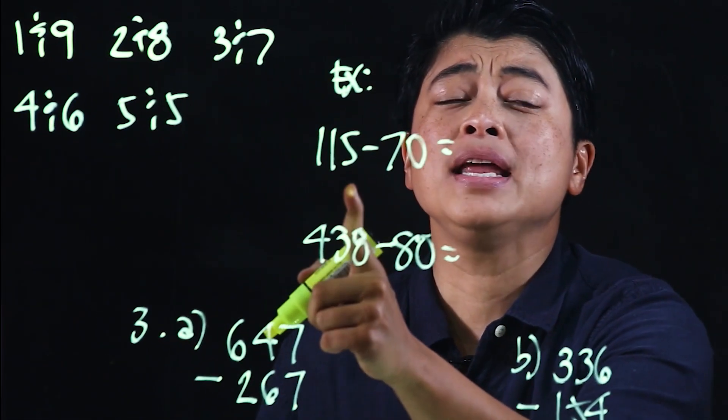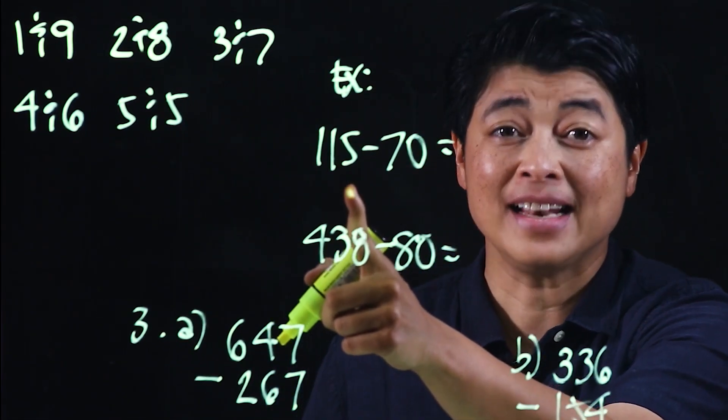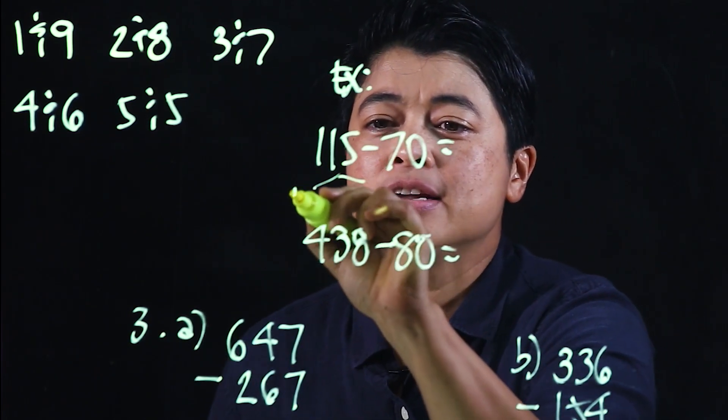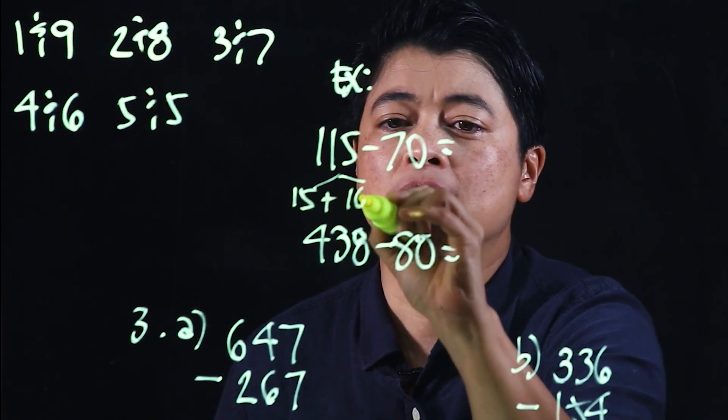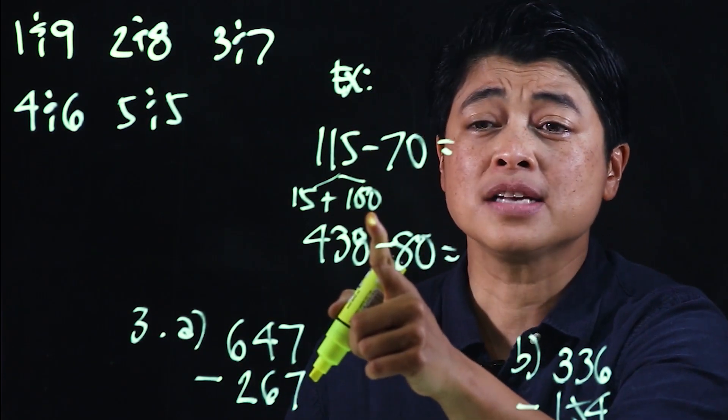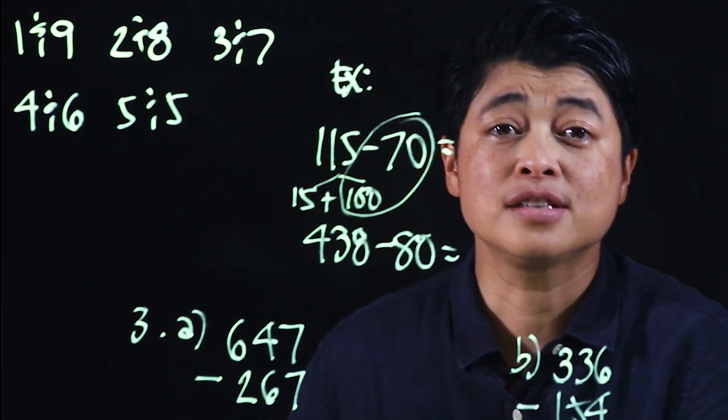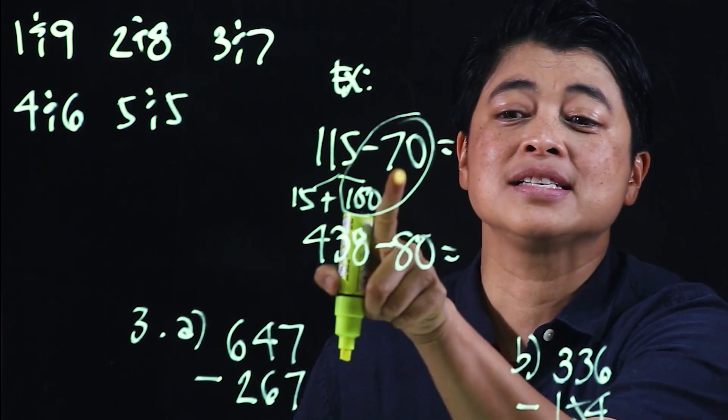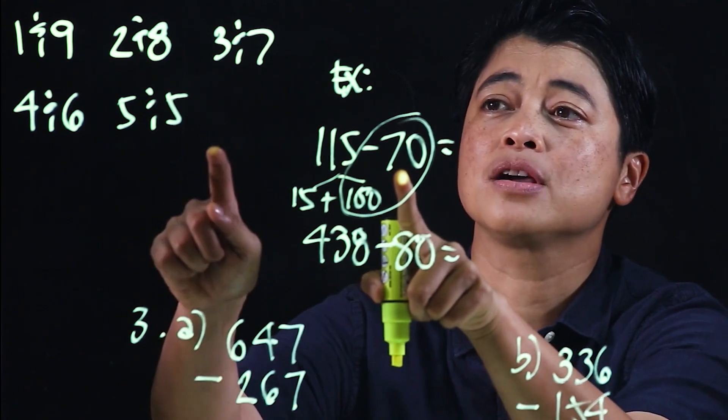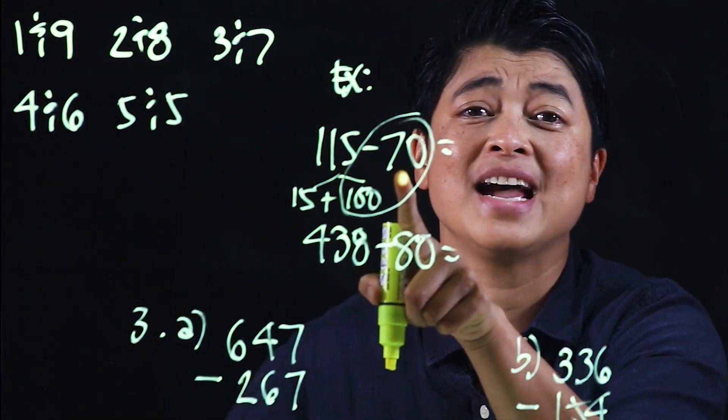If we need to subtract mentally, we need to break this down as 15 plus 100. Why do we want to break it down as 15 plus 100? So that we can subtract these two. That's 100 minus 70, which makes it 30. Based on the grouping that we have, all we have to do is add zeros to those basic groups.